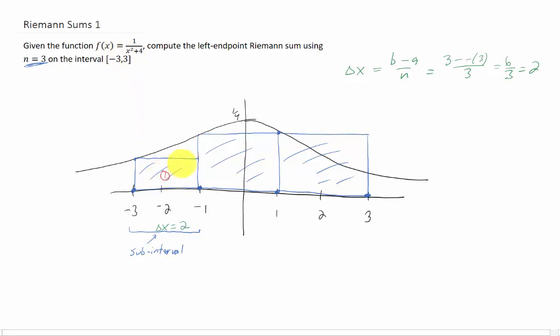We need to find its height. Its height is found using this function. Let's call this rectangle 1. Our first area is going to be 2 times the height of this function at x equals negative 3. That's just f of negative 3. f of negative 3 can be found by plugging negative 3 into the function. That's going to give us 2 times 1 13th, which is 2 13ths.